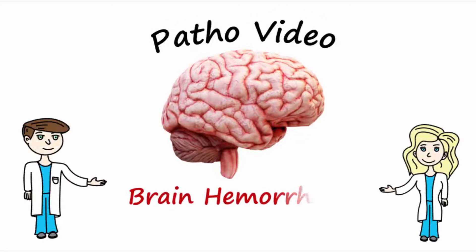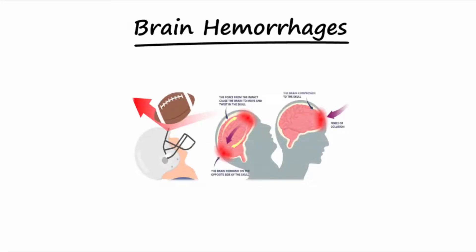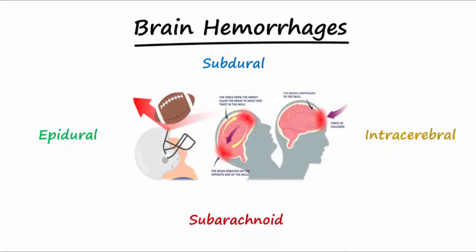Today's topic is brain hemorrhages. Four major types of brain hemorrhages include epidural, subdural, subarachnoid, and intracerebral.